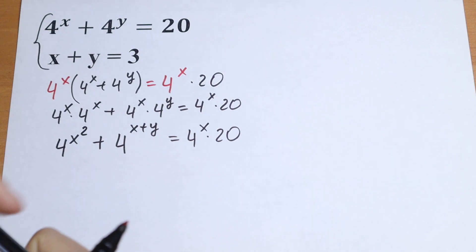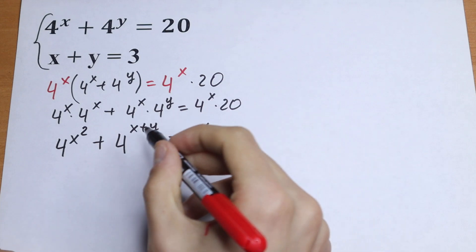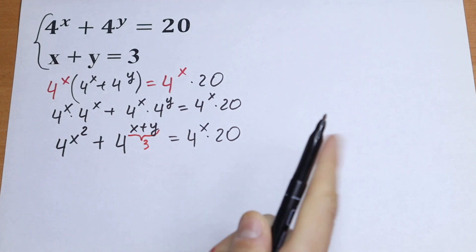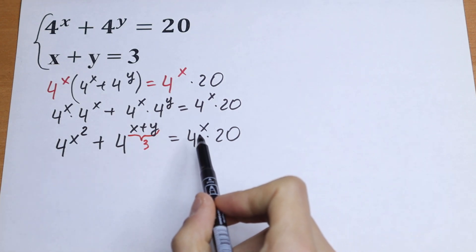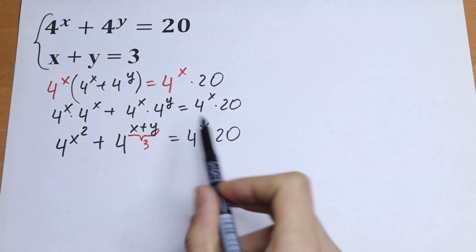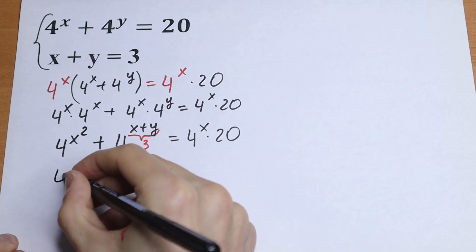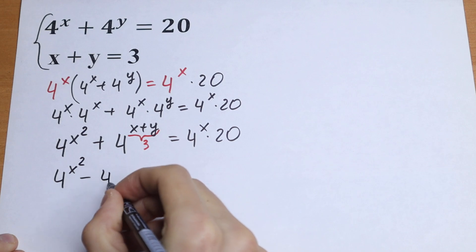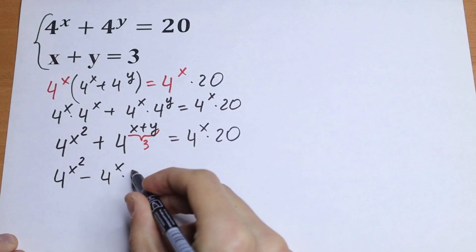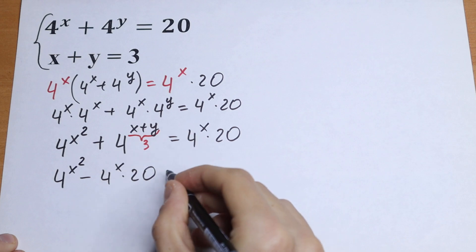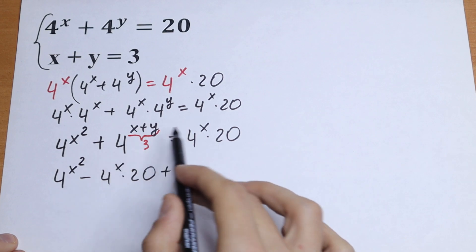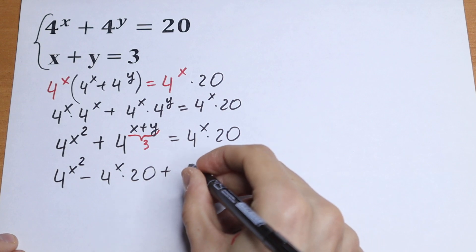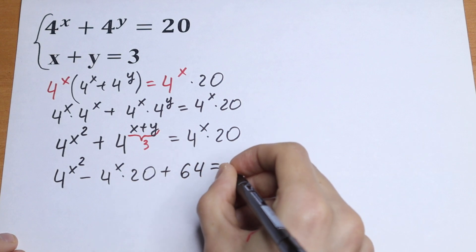As you can see, x plus y equals 3, and this is our x plus y right here. So we can simplify this: bringing 4 to the power x times 20 to the left, we have 4 to the power x squared minus 4 to the power x times 20, plus 4 cubed — because x plus y equals 3, so 4 cubed equals 64 — equal to 0.